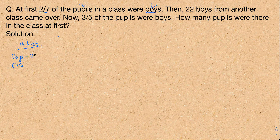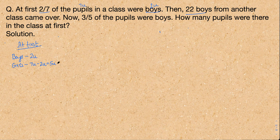So boys are two units. How many units of girls? It's the total units minus the boys: seven units minus two units gives us five units of girls. Then, 22 boys from another class came over — boys were two units and girls were five units, so the fraction of boys and girls will now change.